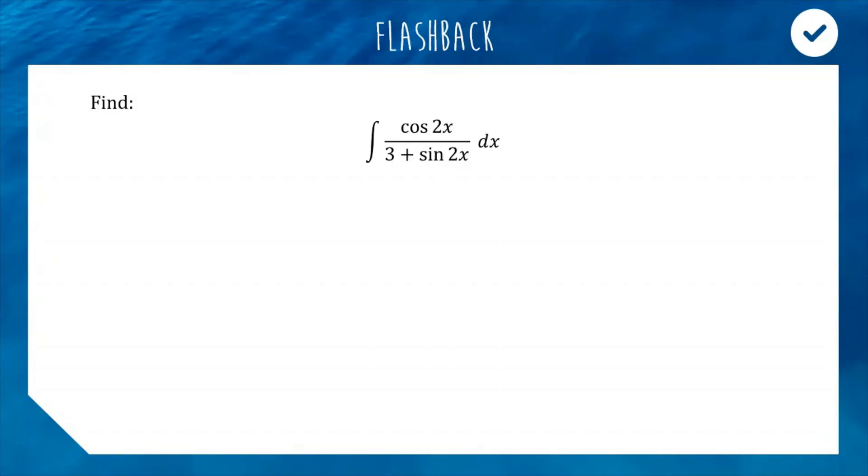Here is your answer. Hopefully you recognize that if you put a 2 up the top of this fraction, which means you need to put a half out the front so you're multiplying by 1. The derivative of 3 plus sine 2x is cos 2x times 2, which is right here. So the integral will be the half out the front ln absolute value of the bottom plus your constant. Great job if you got it.